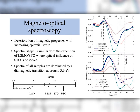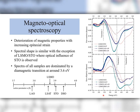The resulting magneto-optical spectra of the four samples can be seen on the right, with obvious deterioration of magnetic properties with increasing lattice mismatch, as the thin films deposited on LAO and DSO had to be multiplied tenfold to be shown on the same scale. All spectra are dominated by a diamagnetic transition at around 3.6 eV. With the notable exception of LSMO on SDO, they all share a similar spectral shape, though a second peak at around 3.6 eV is caused by the optical influence of SDO. We can also see a transition at around 2.4 eV, shared by all samples.